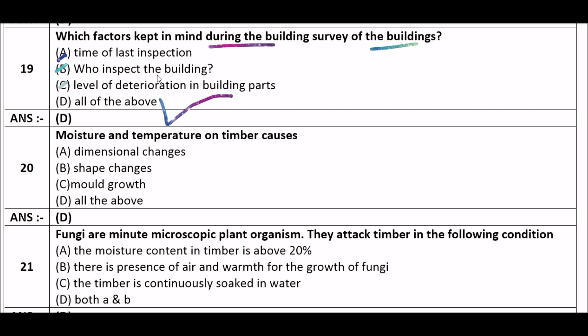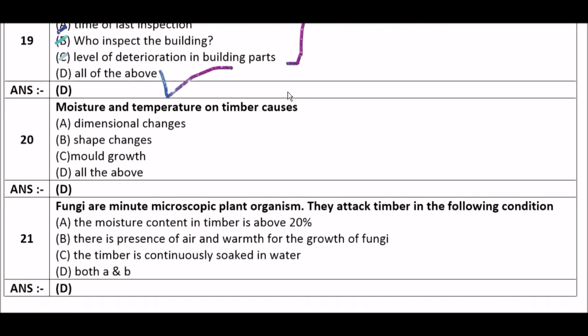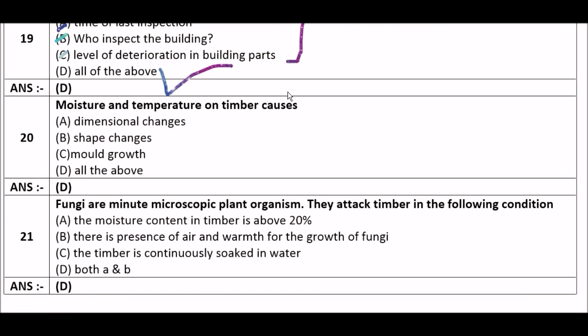Next question: Moisture and temperature on timber causes — option A: dimensional changes, option B: shape changes, option C: mold growth, option D: all of the above. The right answer is option D — all of the above. Moisture and temperature on timber causes dimensional changes, shape changes, and mold growth.